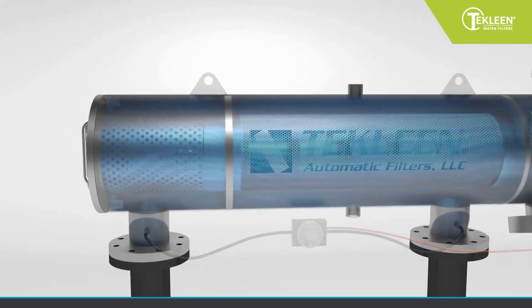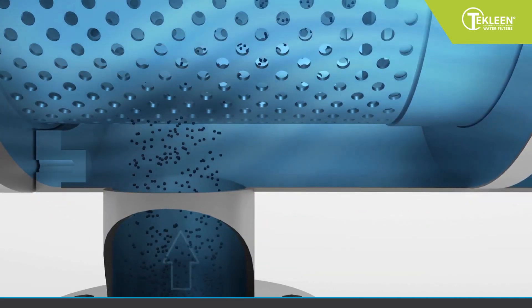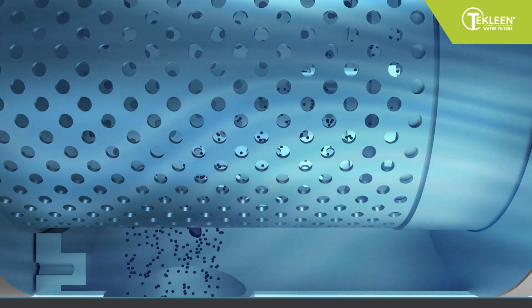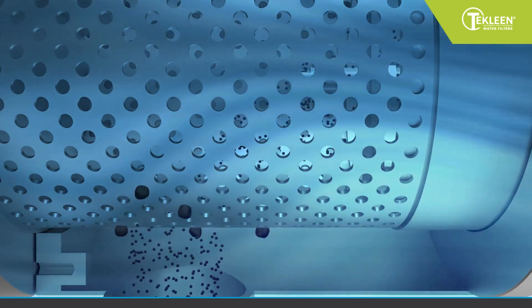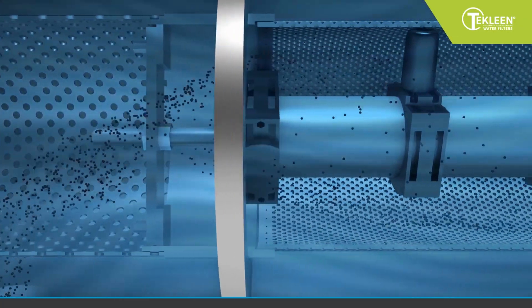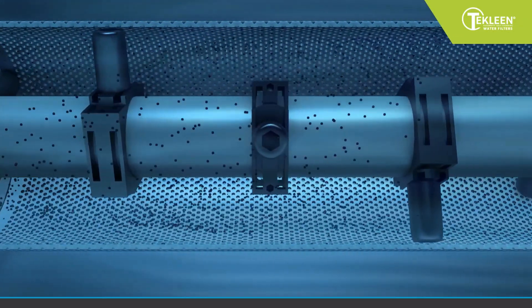Let's take a closer look at how our filters operate. Dirty water enters the filter through the inlet and passes through a coarse screen that protects the fine screen from any large particles that might damage it. The water then moves down the center of the filter body, passing through the fine screen.